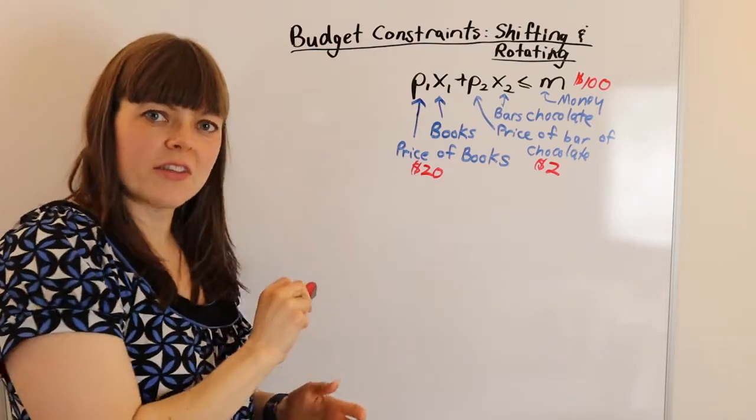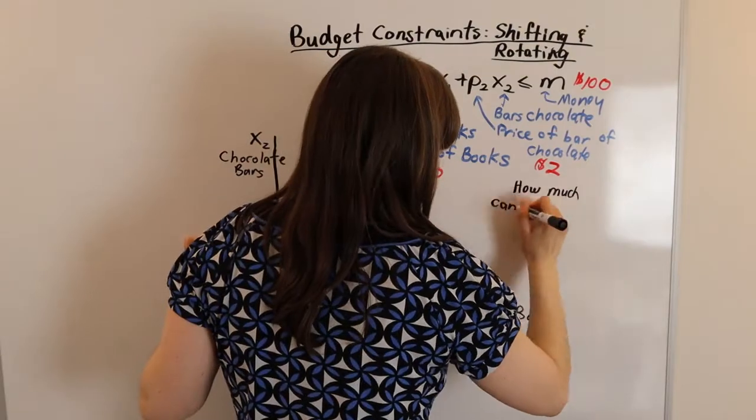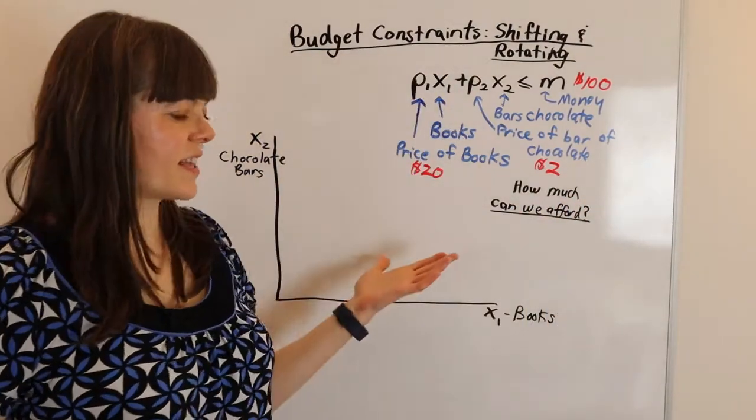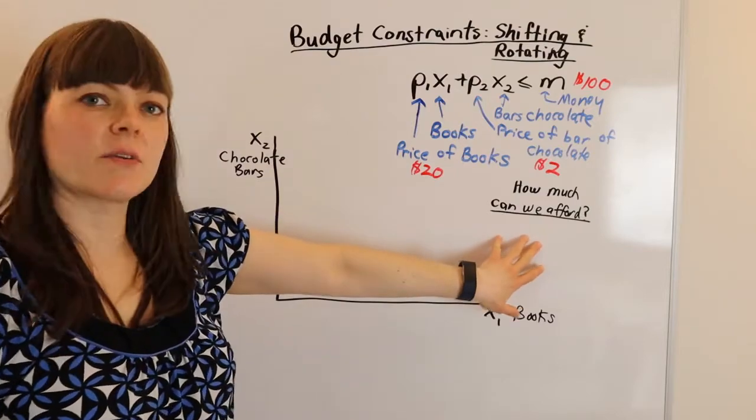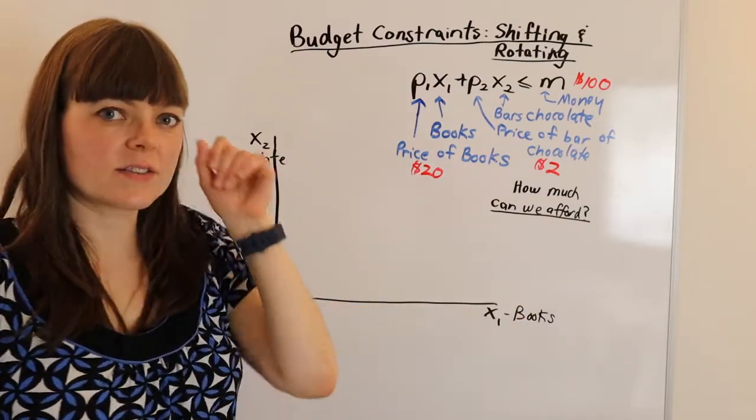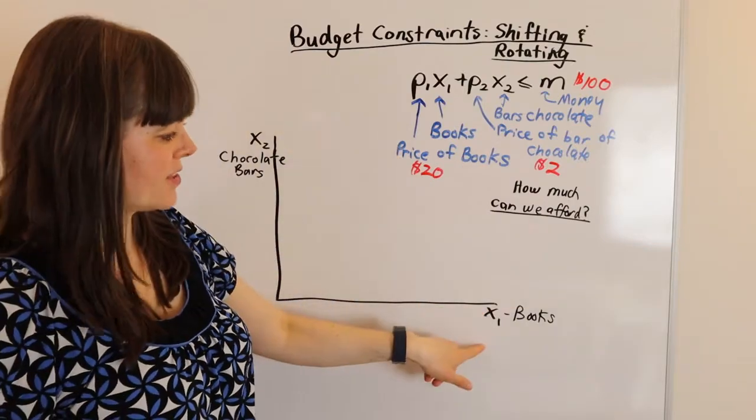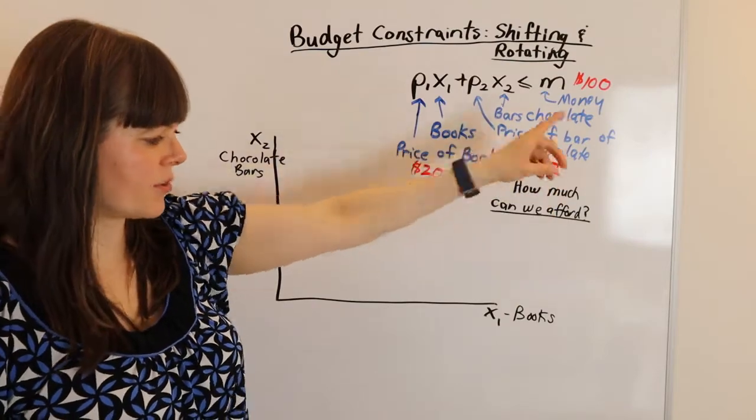So let's draw this as a budget constraint. And we're asking the question when we construct our budget constraint, how much can we afford? And we usually start out with the two axes. What if we spent all of our money on books? What if we spent all of our money on chocolate bars? And so we look at our specific examples.